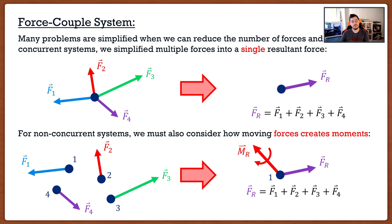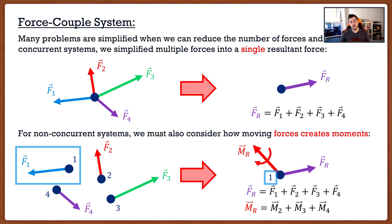How do we get that resultant moment? It's actually fairly simple. The resultant moment in this case is the moment created by force two, plus the moment created by force three, plus the moment created by force four. You may ask: what about force one? This is where students have to be very cautious, because we are finding the resultant force and moment about a specific point. The resultant force and moment about a point will be different than the resultant force and moment about a different point. The resultant force stays the same, but the moments change depending on which point you choose.